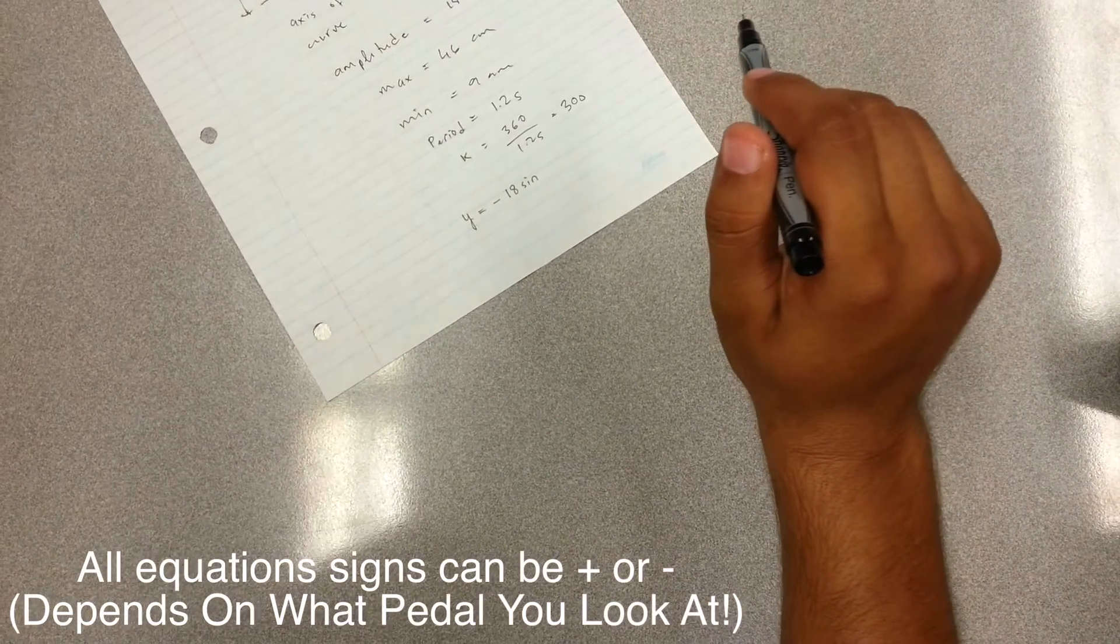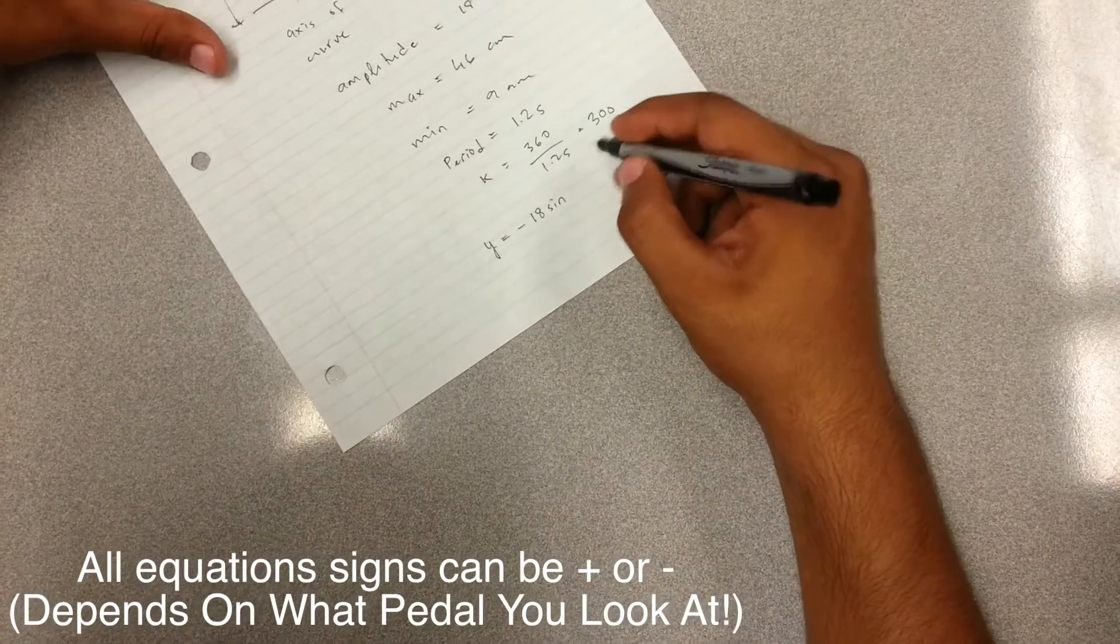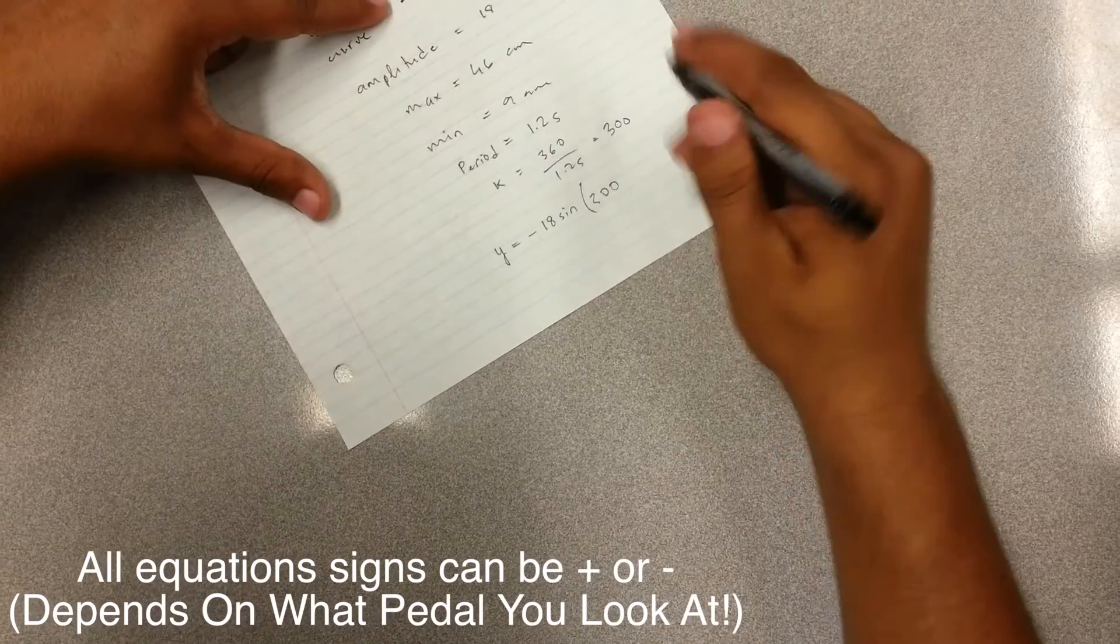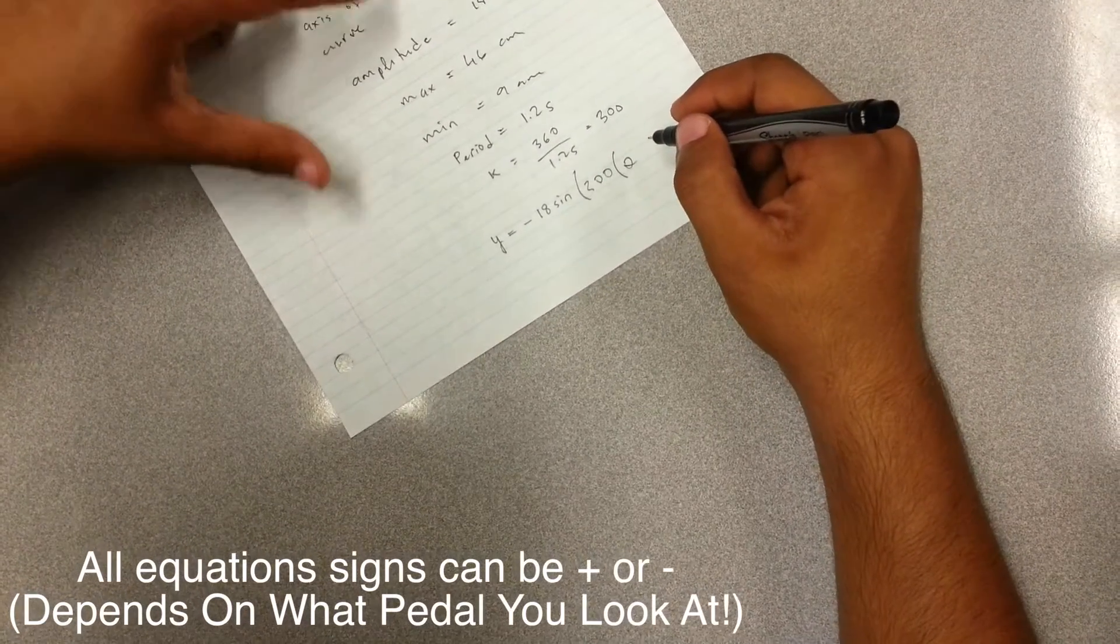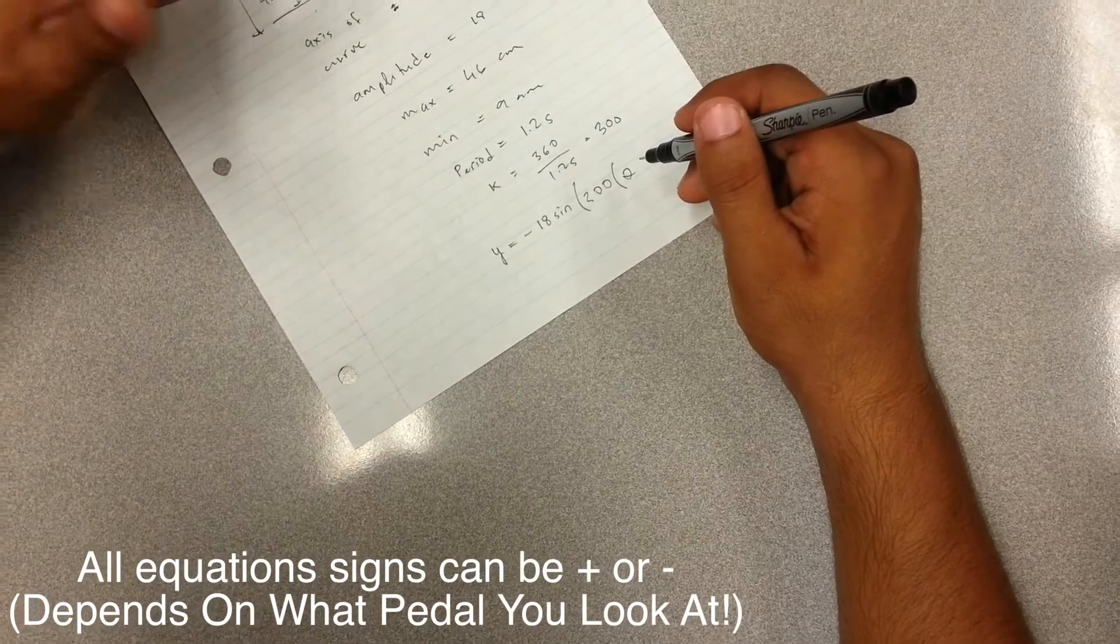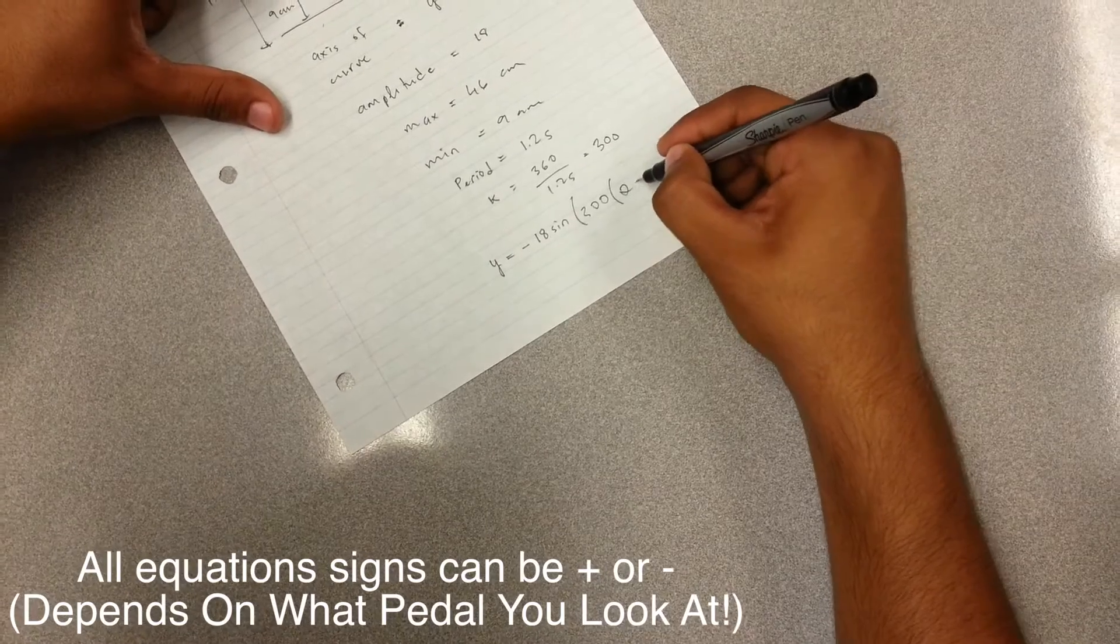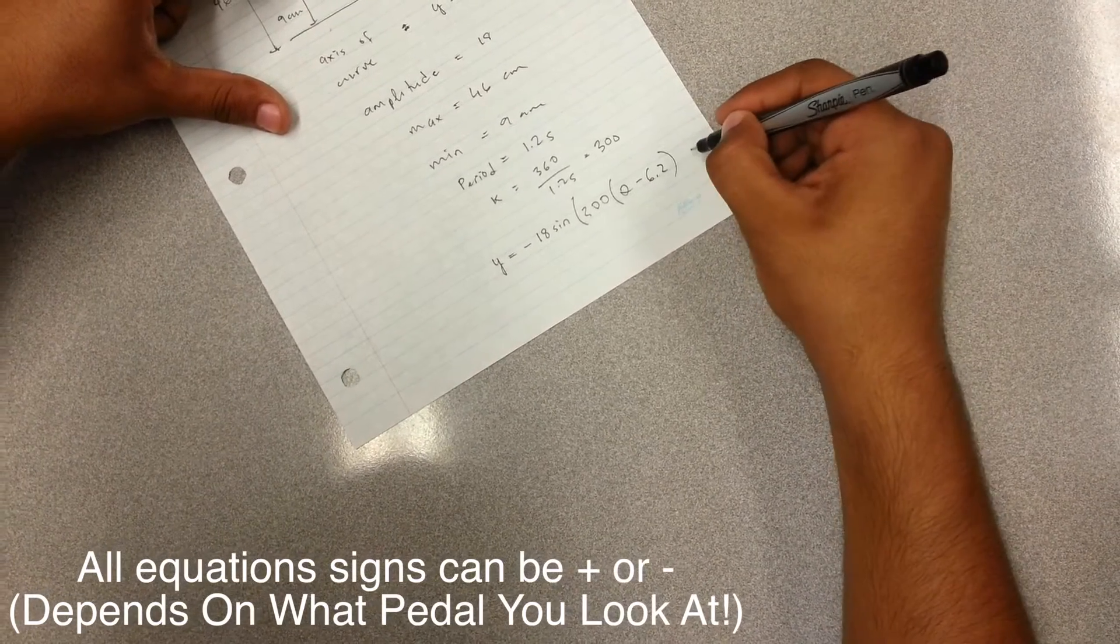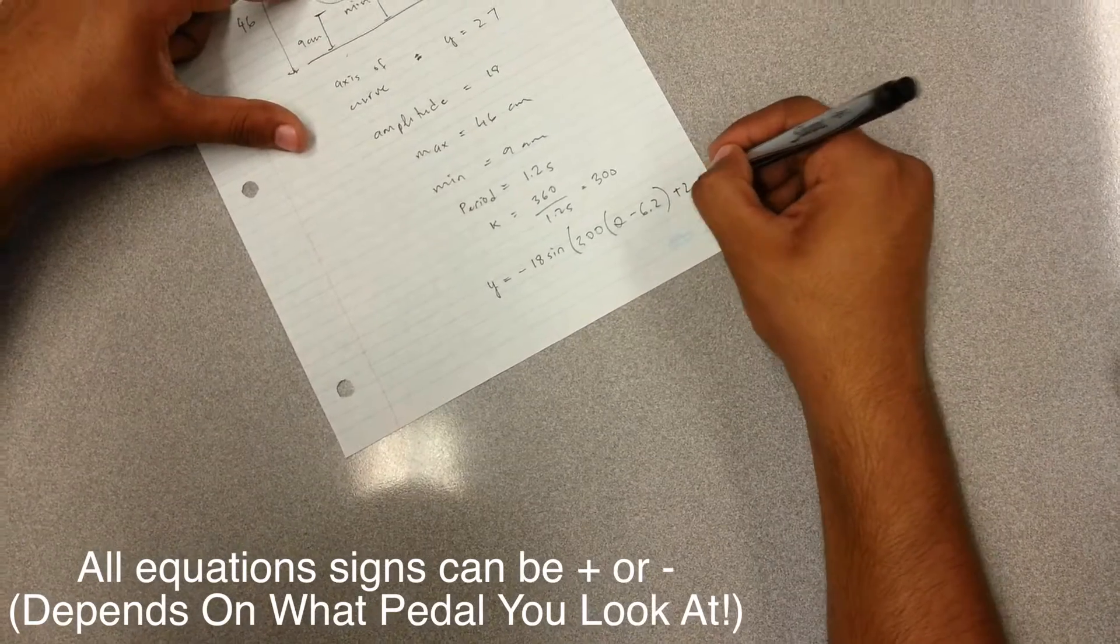We don't start from the maximum, so it can't be a cosine graph. It's going to be a sine graph. K is 300. There's going to be D. Since it took only 6.2 seconds to accelerate and come to a constant speed, K will be 6.2. And the C in this case would be the axis of curve, which is going to be 27.